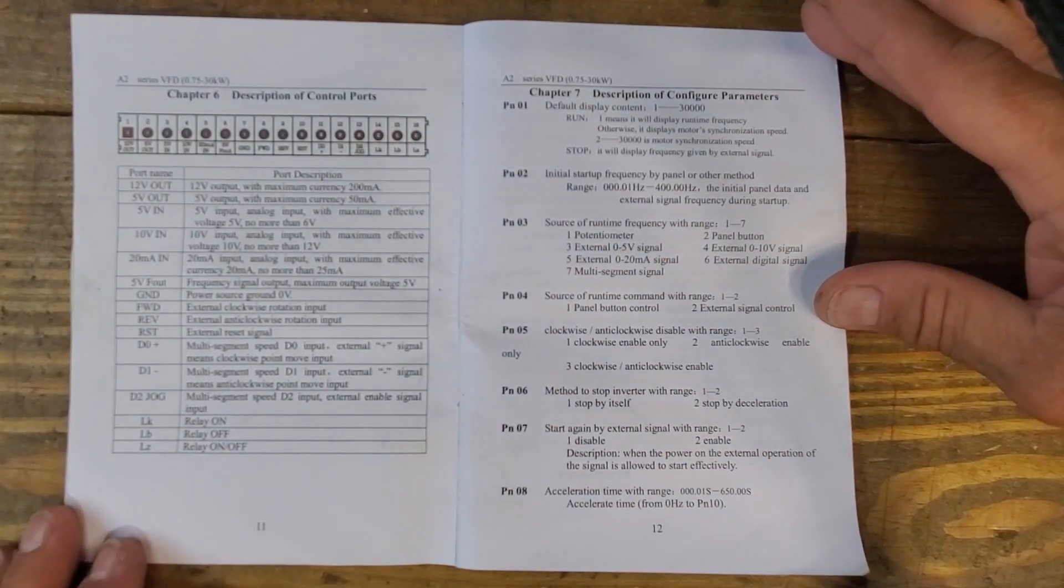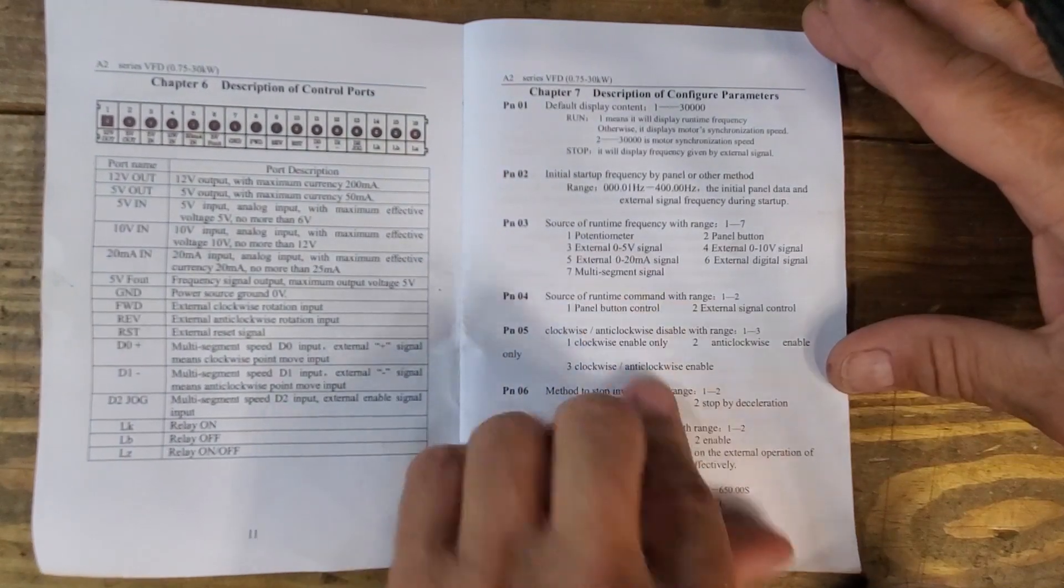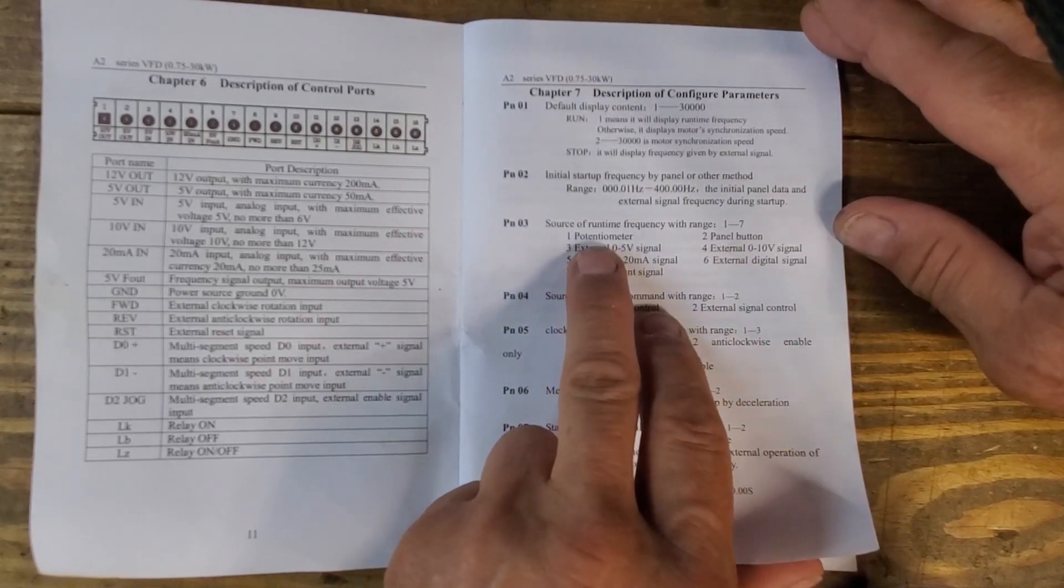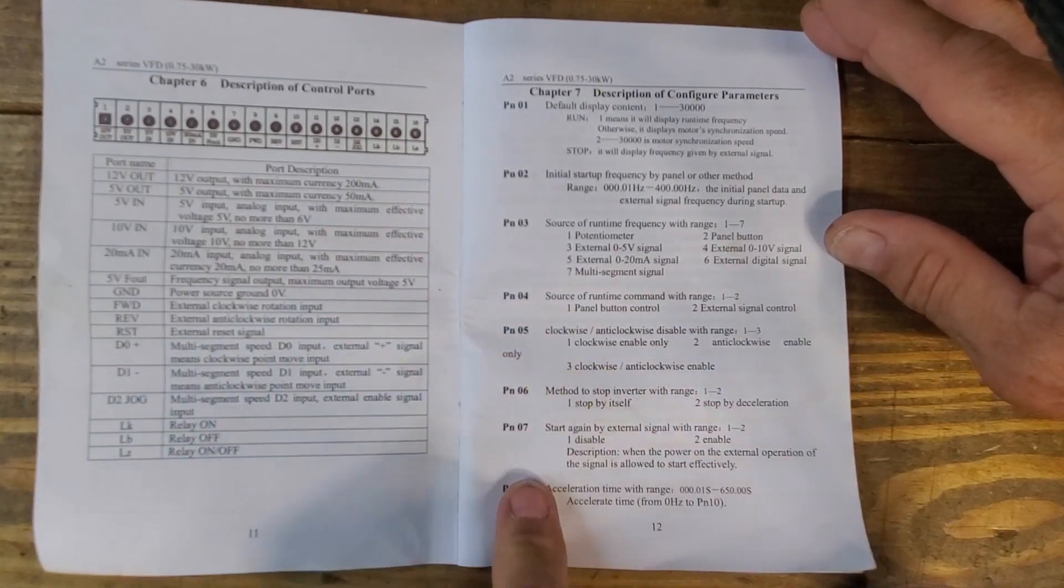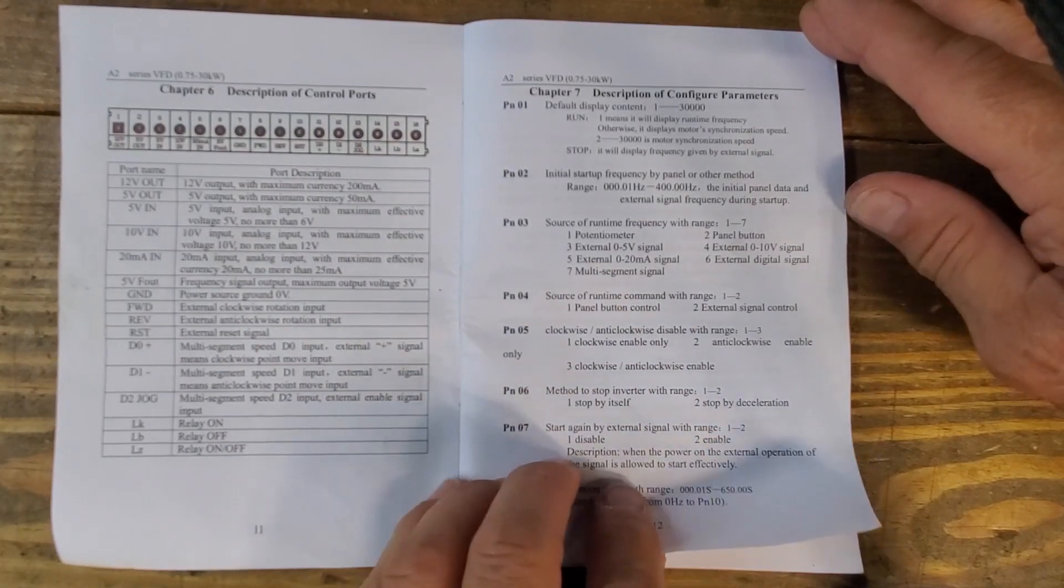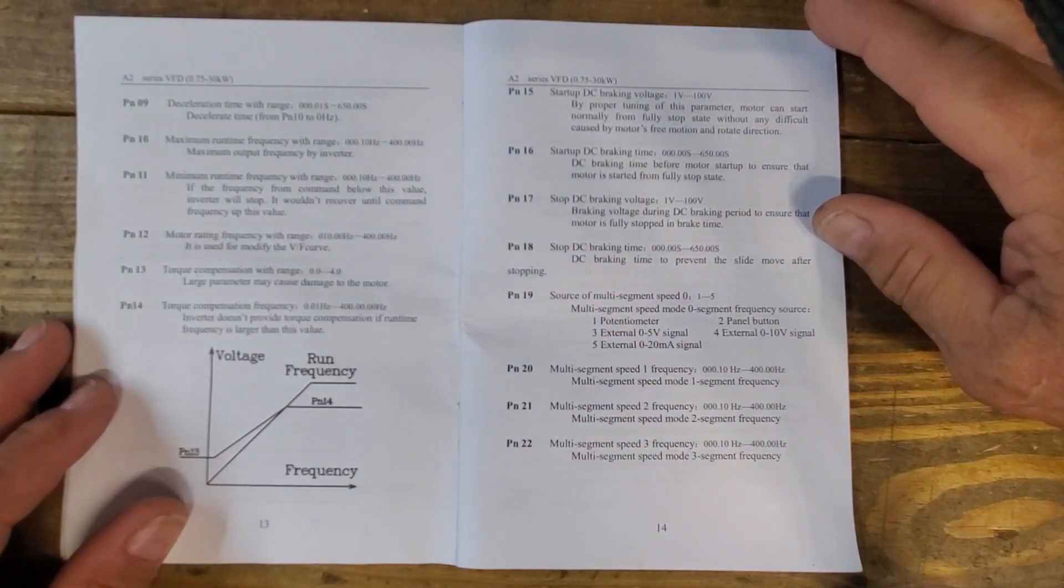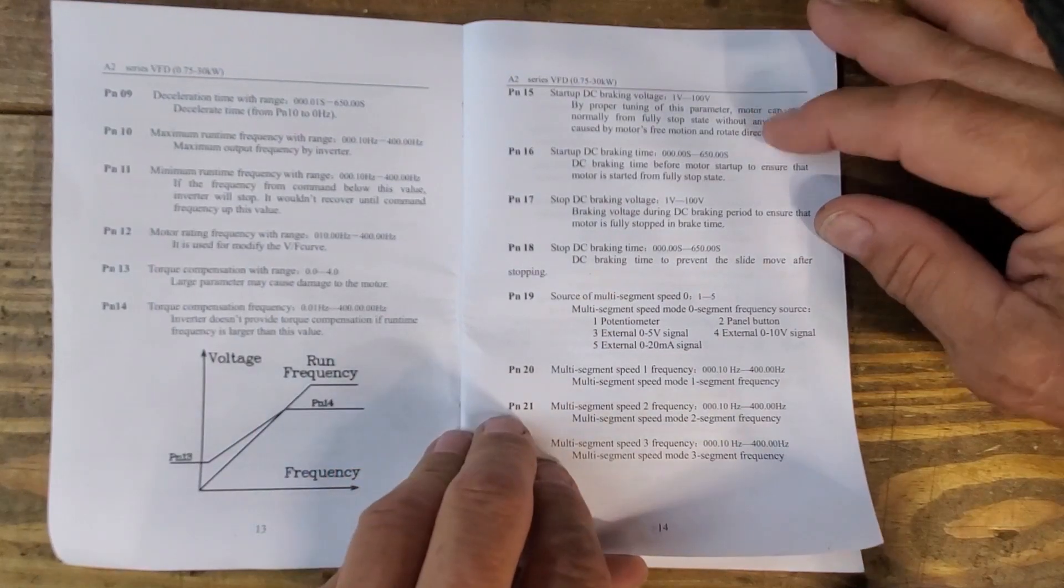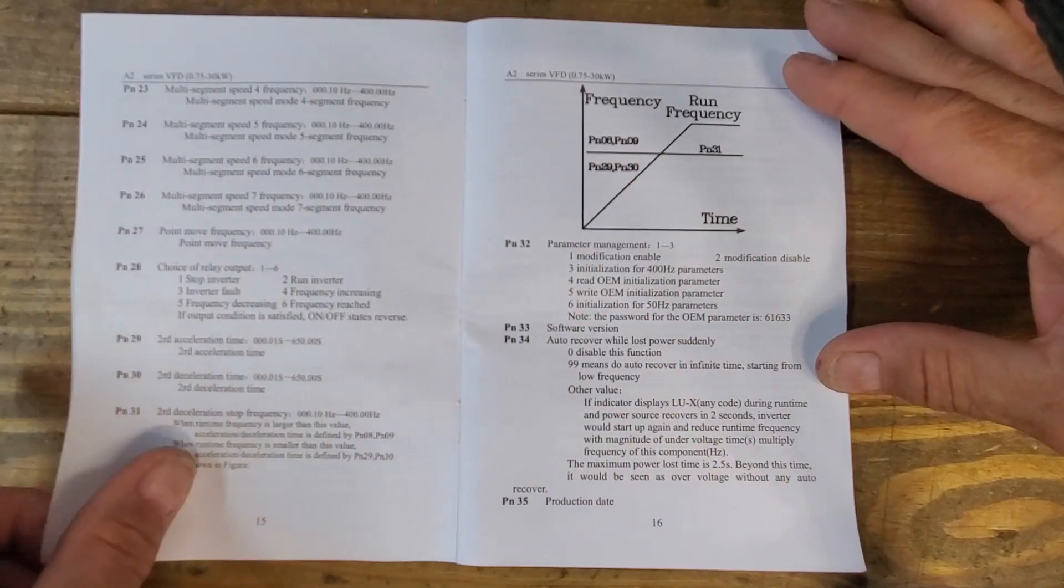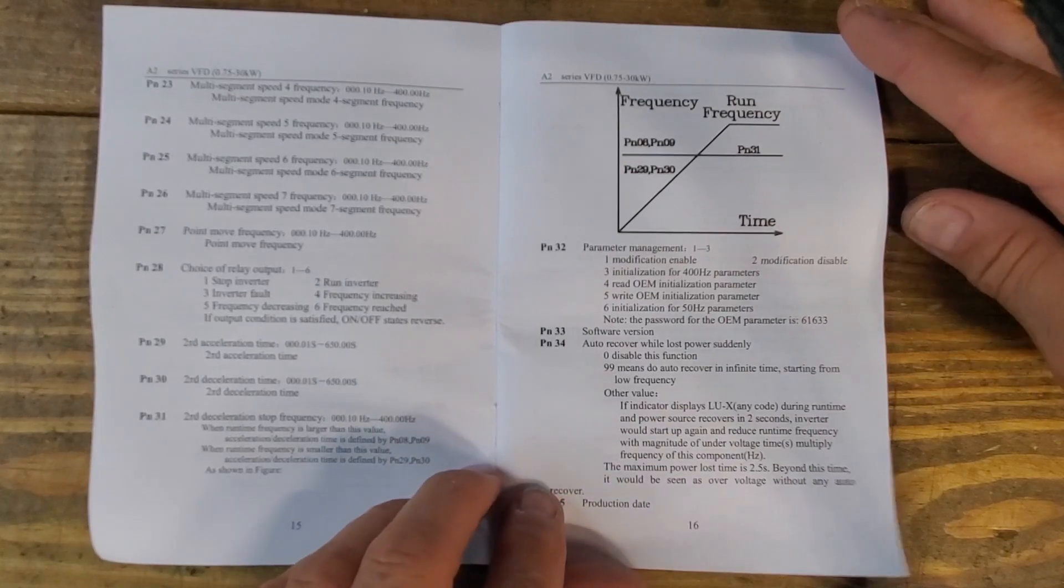Now we get into the description of what all these control ports do. So you can see your PN3 is the input of the run frequency range. So you need to have a panel button or you have external signals. Again, you can just run through this and pick out what you're using the unit for. Mine's just simple speed control of a mill. So for me, it was pretty simple. Again, I didn't alter any of the DC braking voltages or any of that. I just left all of this as default and leave these on the page so you can read it at your will.